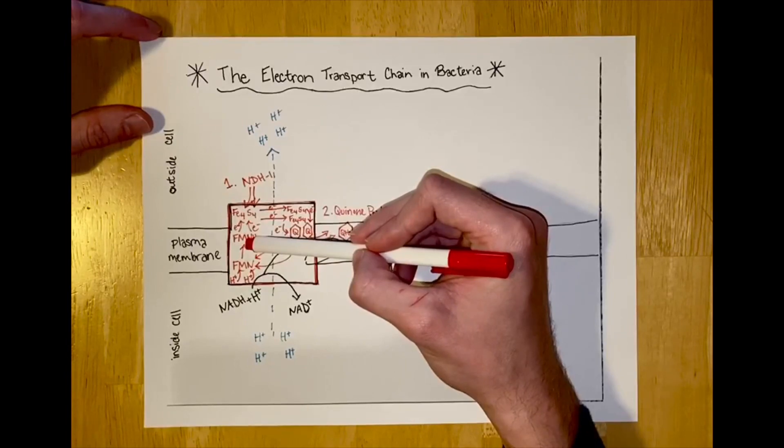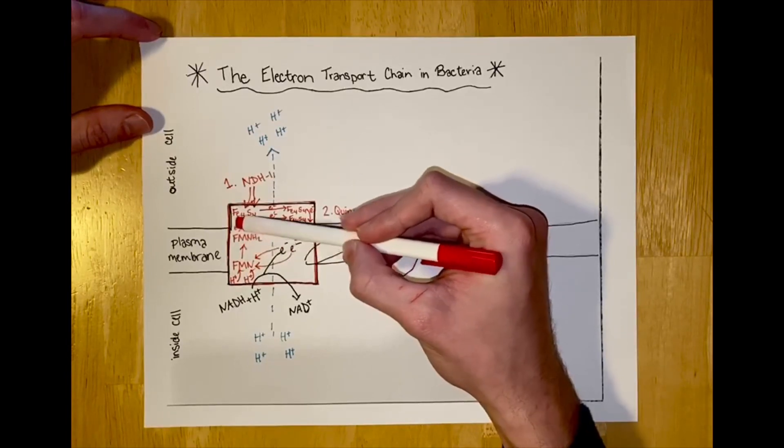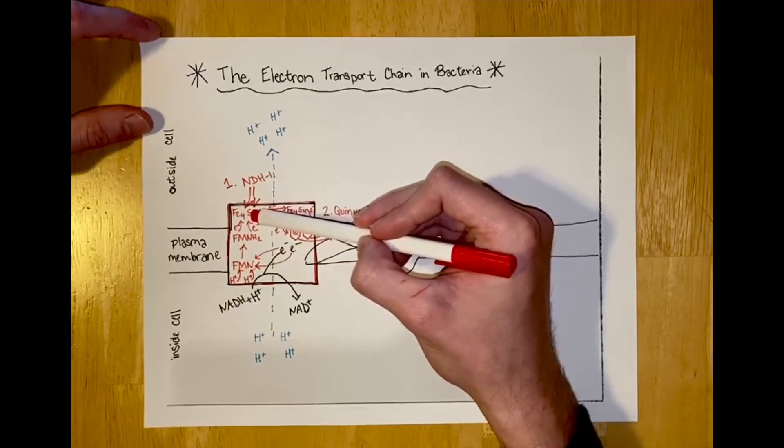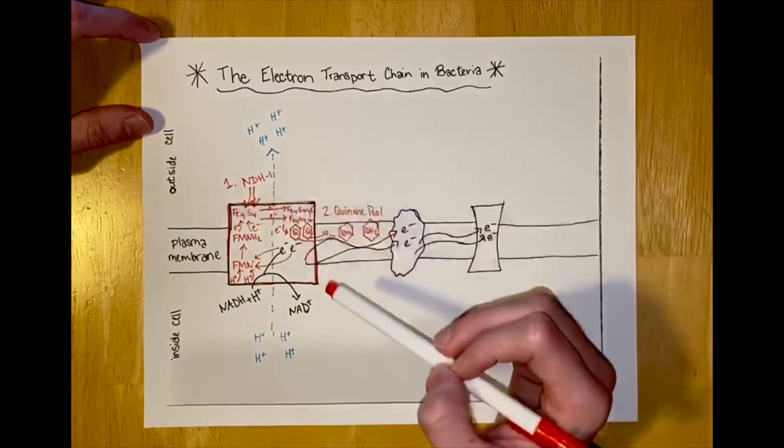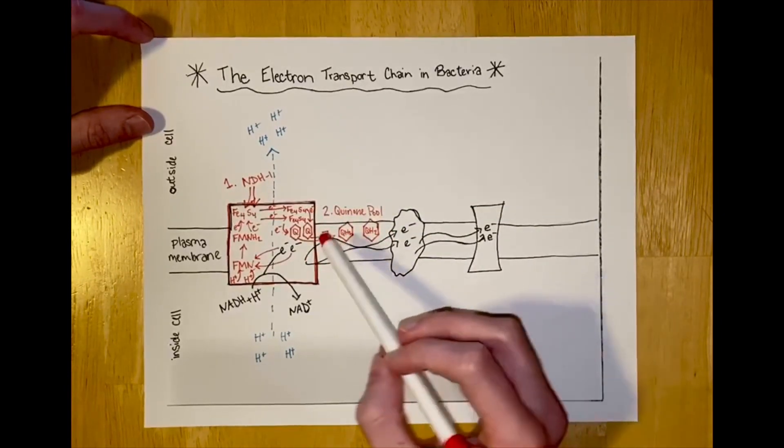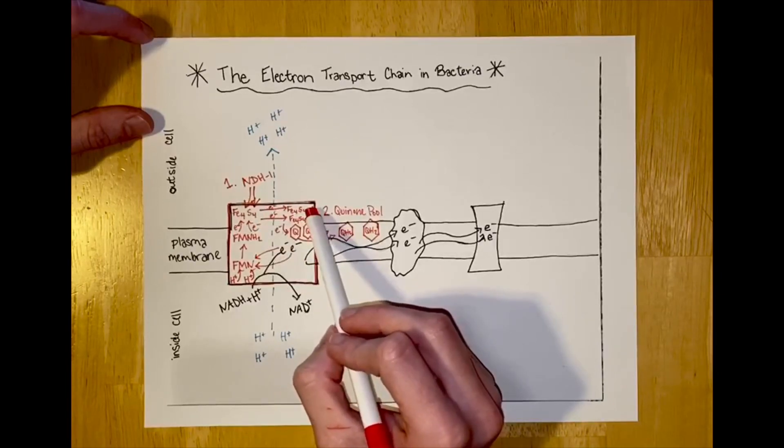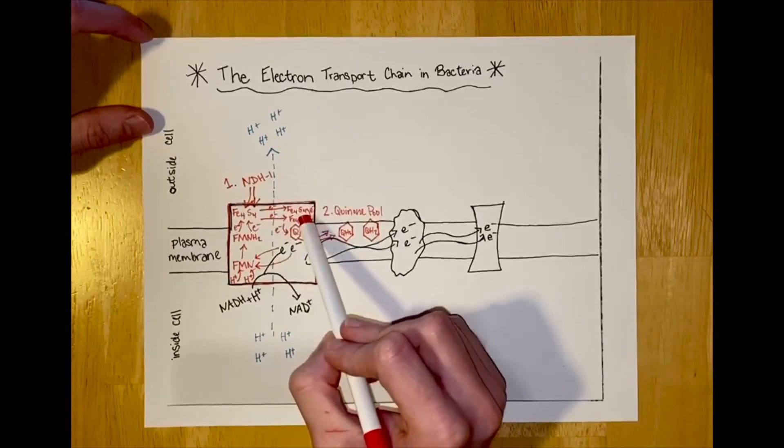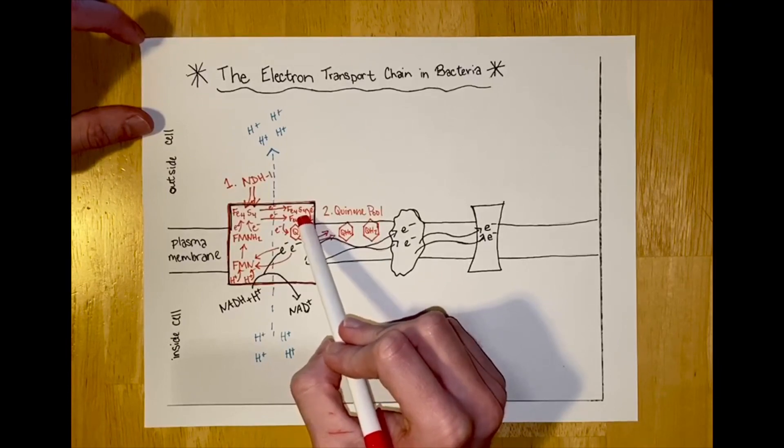FMNH2 donates an electron, one at a time, to Fe4S4. The Fe4S4 then passes that electron on to another iron sulfur center, one at a time as well. The first electron carrier ends up moving a total of four hydrogen ions across the membrane out of the cell.